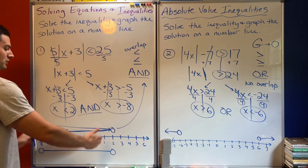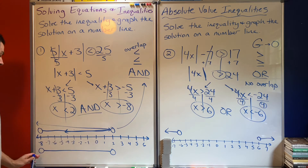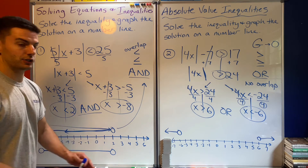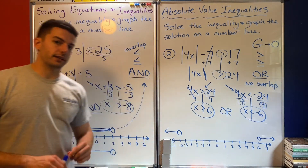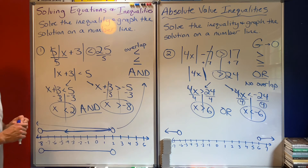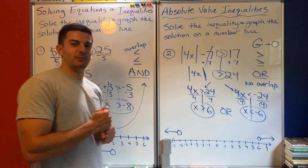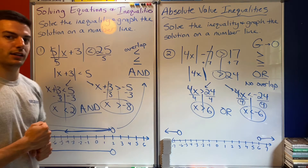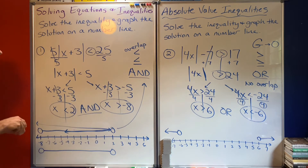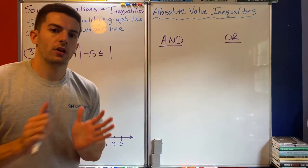This 'or' result is two separate groups of numbers — every number less than negative 6, or every number greater than 6. Compare that to the first problem, which was a single span of numbers from negative 8 to positive 2. Hopefully that makes a little bit of sense.